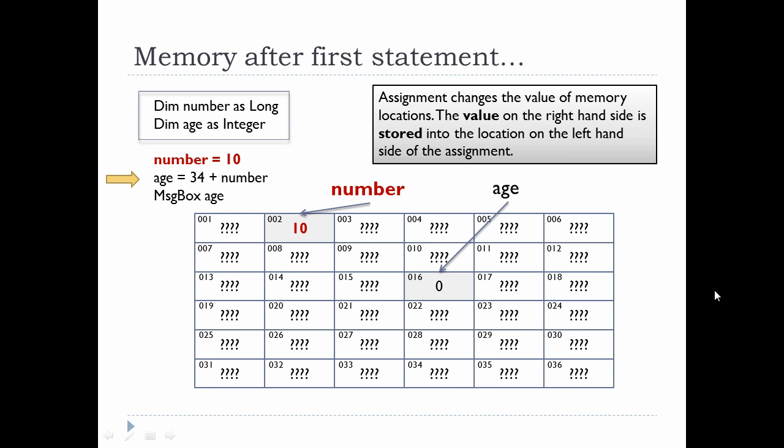So once we execute that first statement of course the memory location that's reserved for the variable number gets the value 10. The basic idea here is that you have a value on the right-hand side of your assignment and you have a memory location on the left-hand side. So the value on the right-hand side gets stored into the location on the left-hand side.